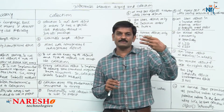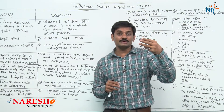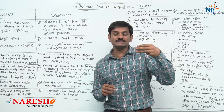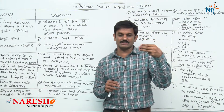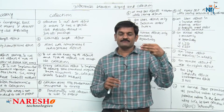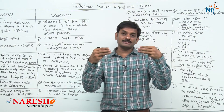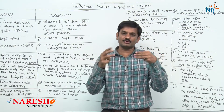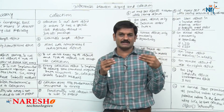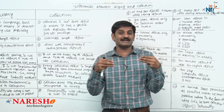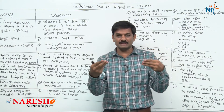Third problem of array: it can store only homogeneous objects and does not allow heterogeneous objects. Whereas collection will store both heterogeneous and homogeneous objects — both types are allowed. This is because collection maintains an object array in the background.